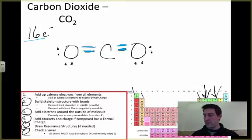And now if we count them up, this oxygen has 2, 4, 5, 6, 7, 8. This oxygen has 2, 4, 5, 6, 7, 8. Carbon has 2, 4, 6, 8.